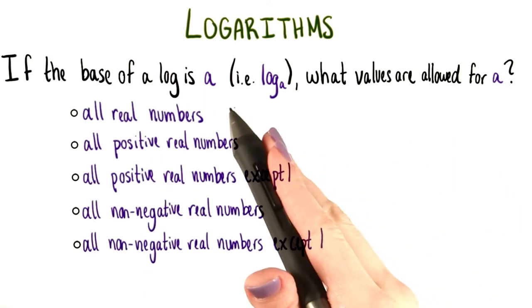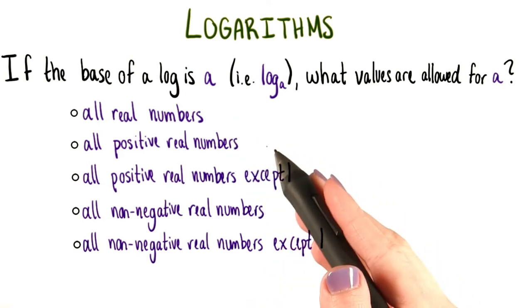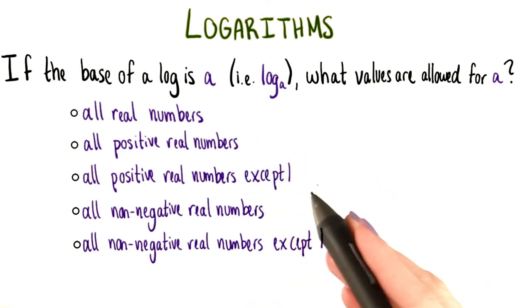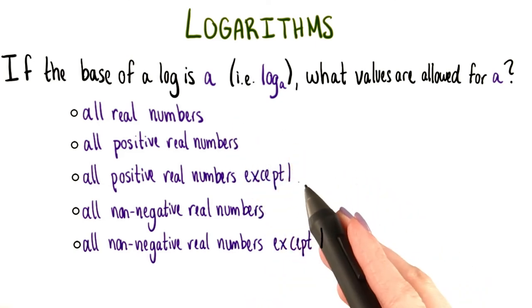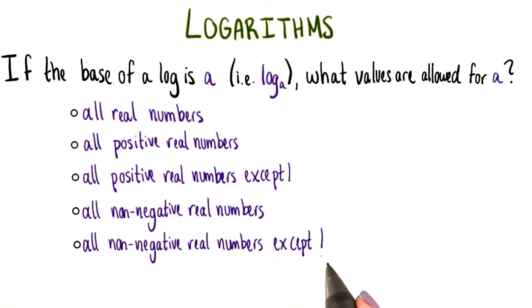Could a be all real numbers, all positive real numbers, all positive real numbers except 1, all non-negative real numbers, or all non-negative real numbers except 1?